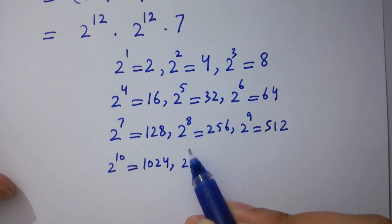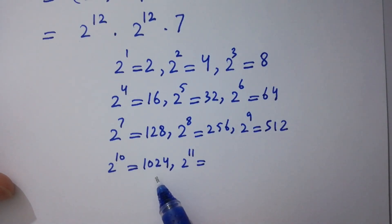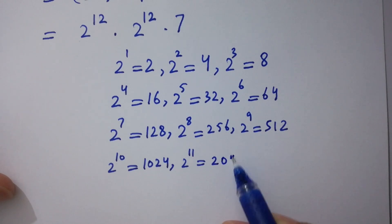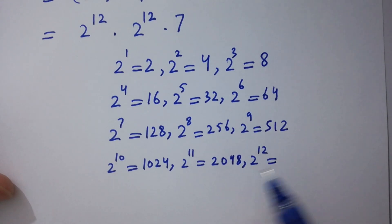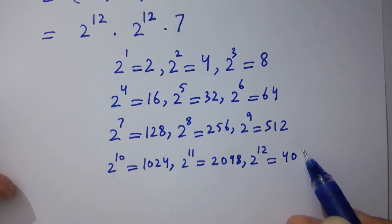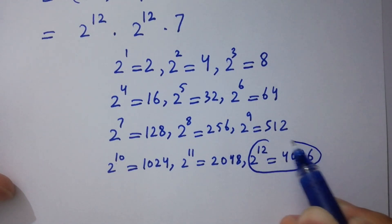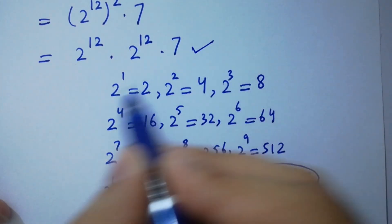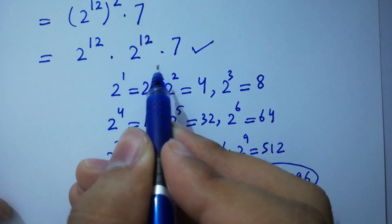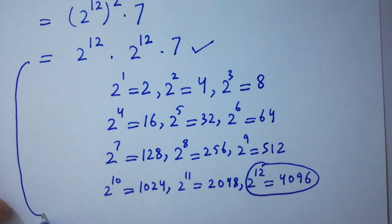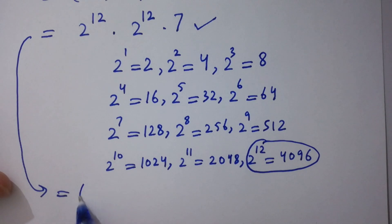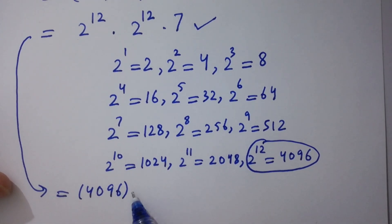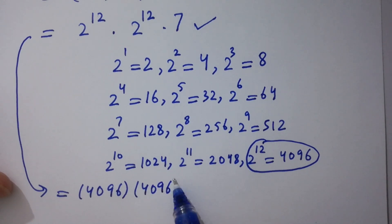Continuing: 2 to the power 11 is 2048, and 2 to the power 12 is 4096. It means 2 to the power 12 times 2 to the power 12 times 7 is equal to 4096 times 4096 times 7.